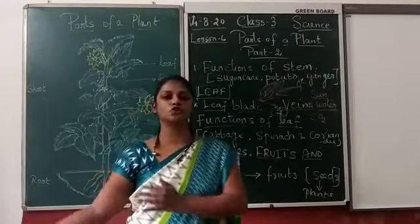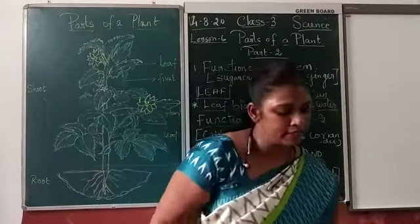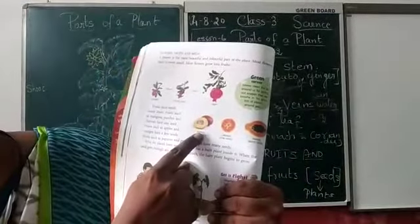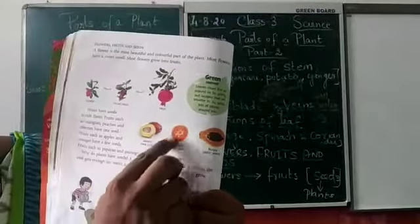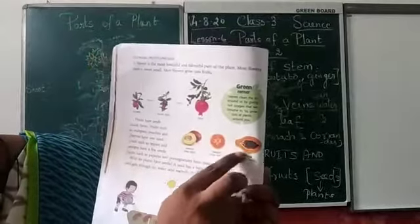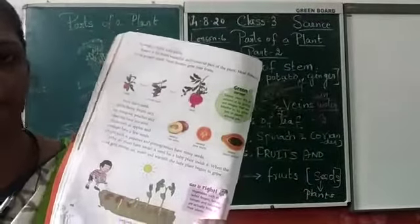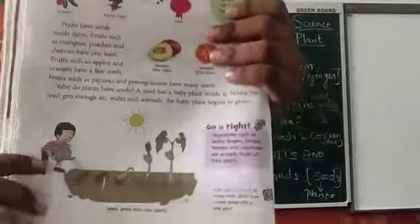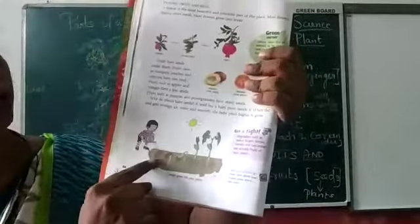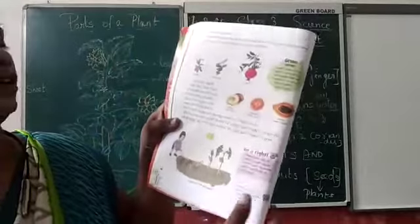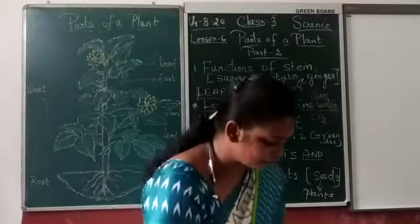These seeds are helpful for the plants to grow. For example, mango tree has only one seed. Peaches also have one seed. Oranges have some seeds, like apple. Papaya has so many seeds. Pomegranate also has so many seeds. These are different kinds of fruits which have different kinds of seeds, and these seeds are helpful for the plants to grow. Some plants grow through stem and some grow through seeds. Through the help of sunlight and water we can see the plant growing.